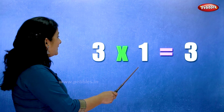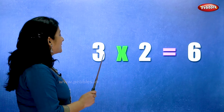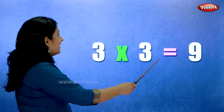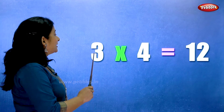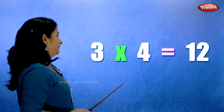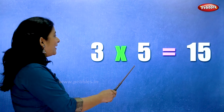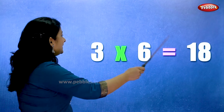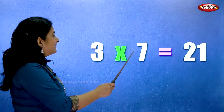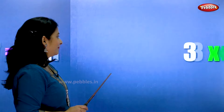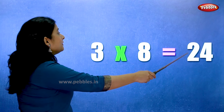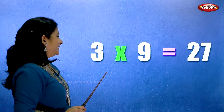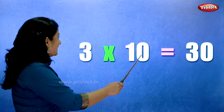3 ones are 3. 3 twos are 6. 3 threes are 9. 3 fours are 12. 3 fives are 15. 3 sixes are 18. 3 sevens are 21. 3 eights are 24. 3 nines are 27. 3 tens are 30.